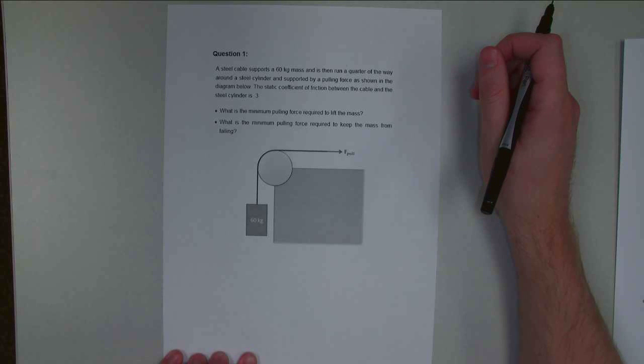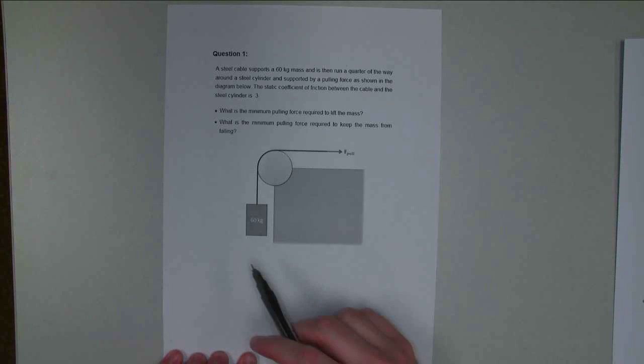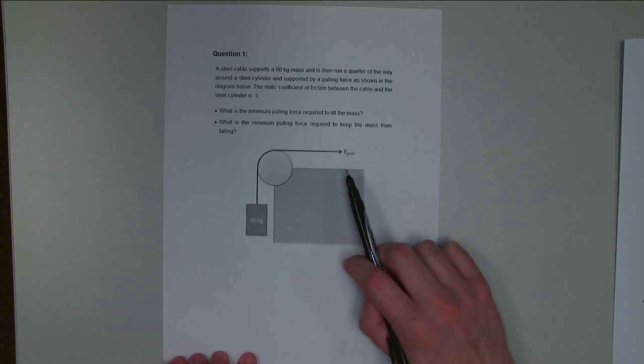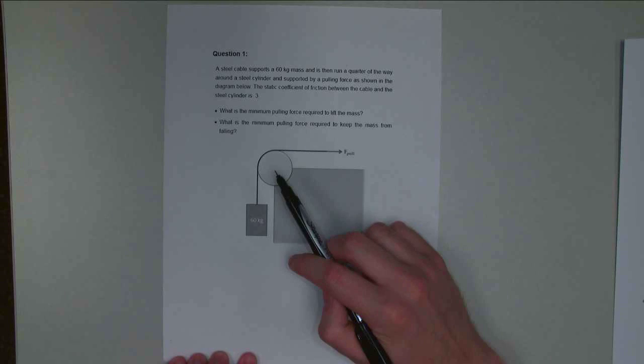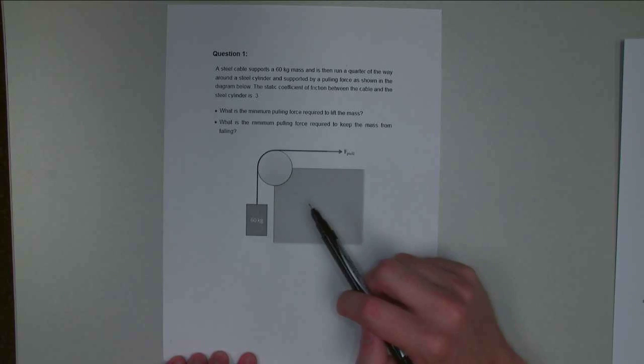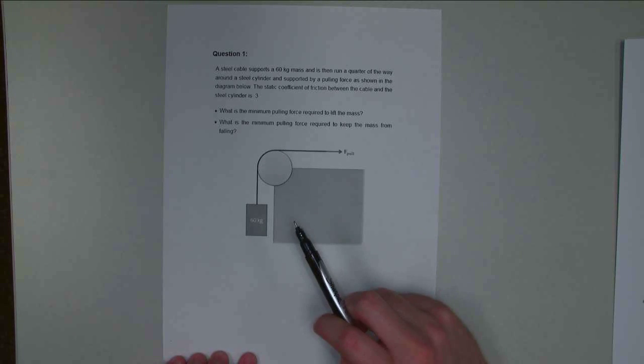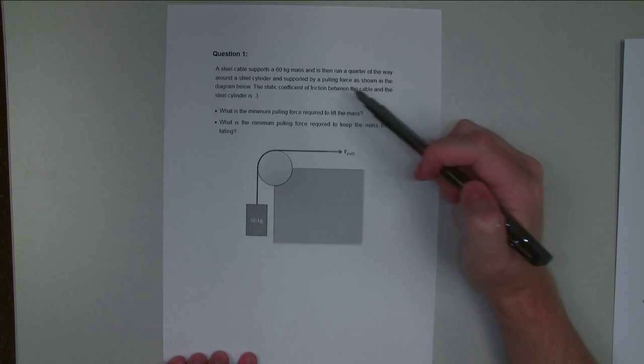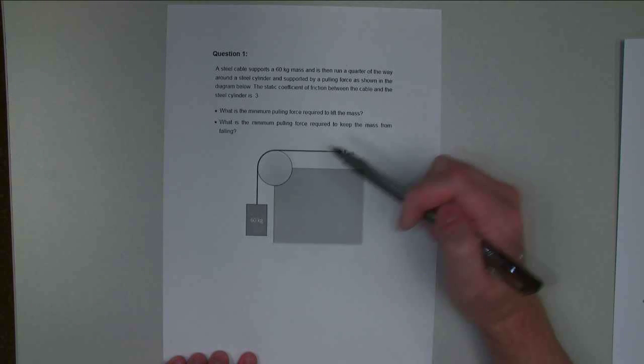Hello. For this problem, we've got a steel cable that's supporting a 60 kilogram mass. We've got some pulling force that we're going to be exerting on the other end of the cable. It runs a quarter of the way around a steel cylinder. The static coefficient of friction between the cable and the cylinder is 0.3.